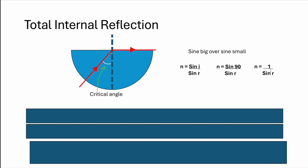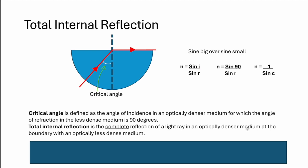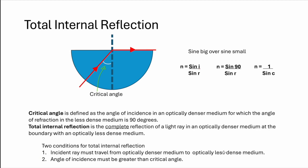So critical angle is defined like that. Angle of incidence, optically denser medium, which angle of reflection in the less dense medium is 90 degrees. Total internal reflection is also defined as such: complete reflection of light ray in an optically denser medium with an optically less dense medium. So like from glass to air or water to air, things like that. So total internal reflection has applications of such.